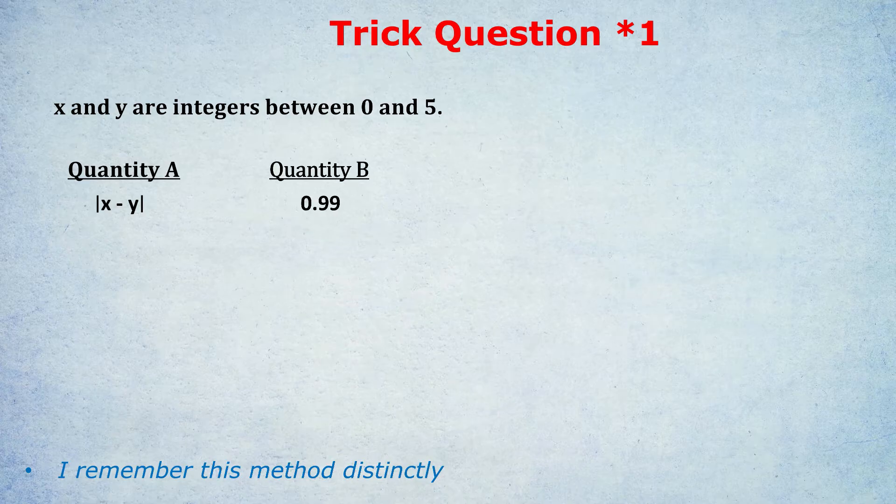Okay, let's do this one. x and y are integers between zero and five. What's bigger? Quantity A: |x - y| in absolute values, or Quantity B: 0.99. And this is a quantity comparison question which is in the GRE, where you need to say which one's bigger, A or B, or they're the same, or D you don't know.